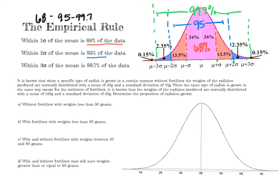Those are the rules for the empirical rule, and we're going to use these percentages to find percentages under any normal curve. As long as we have this bell shape and know the mean and standard deviation, we can use those percentages with fairly accurate results.